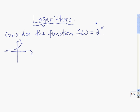Here we have the exponential function f of x equals 2 to the x, and here is a quick sketch of the graph of y equals 2 to the x. From looking at the graph, we see that it passes the horizontal line test, so this function is 1 to 1.